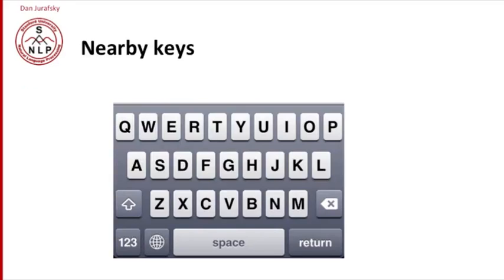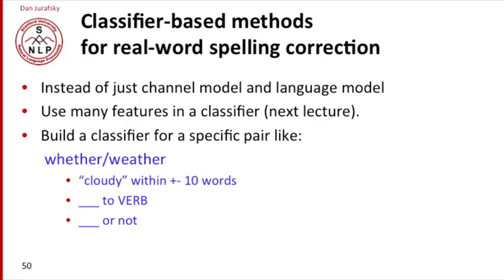There's a picture of the keyboard — R and W are likely mistypings for E on a phone keyboard. Combining all these different factors is often done with a classifier-based model, which is an alternative way of doing real word spelling correction. Instead of just two models — a channel model and a language model — we take those two and a number of other models and combine them in a big classifier. We'll talk about classifiers in the next lecture.